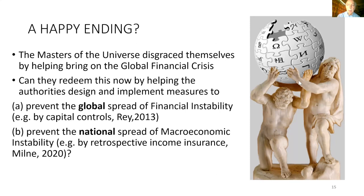I just want to end on possibly a happy note. It seems to me the masters of the universe disgraced themselves by helping bring on the global financial crisis. Can they redeem this now by helping the authorities — helping the Bank of England and the Treasury design and implement measures to prevent the global spread of financial instability, for example by capital controls as Helene Ray recommends, and to prevent the spread nationally of macroeconomic instability by retrospective income insurance? Not that the Bank of England should do this, but the bankers might be able to help design the policies. Thank you.